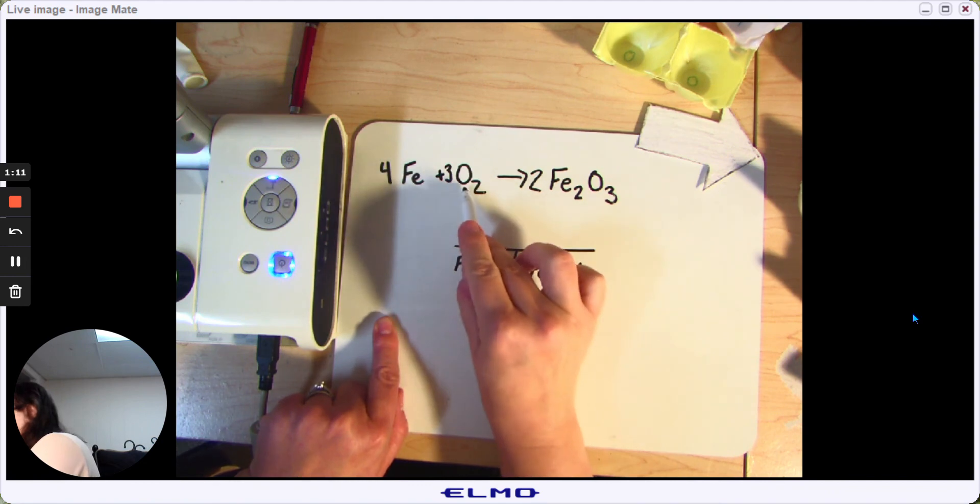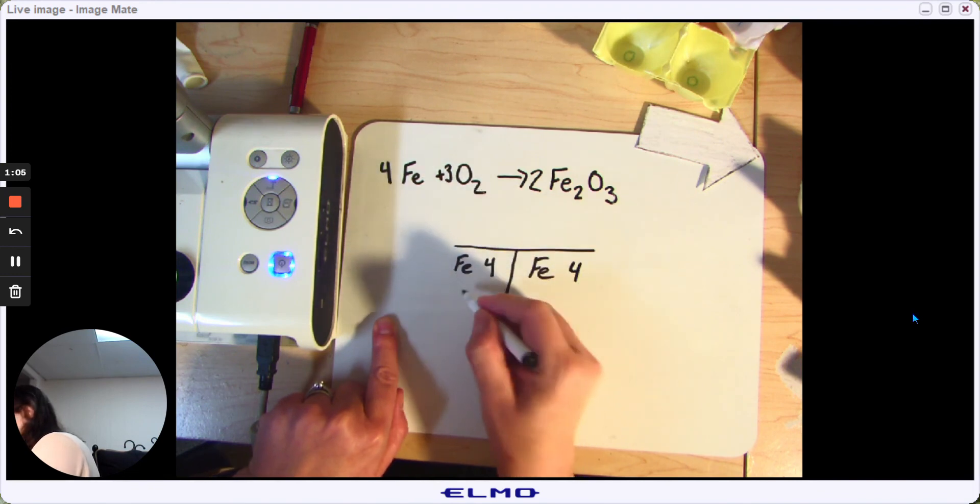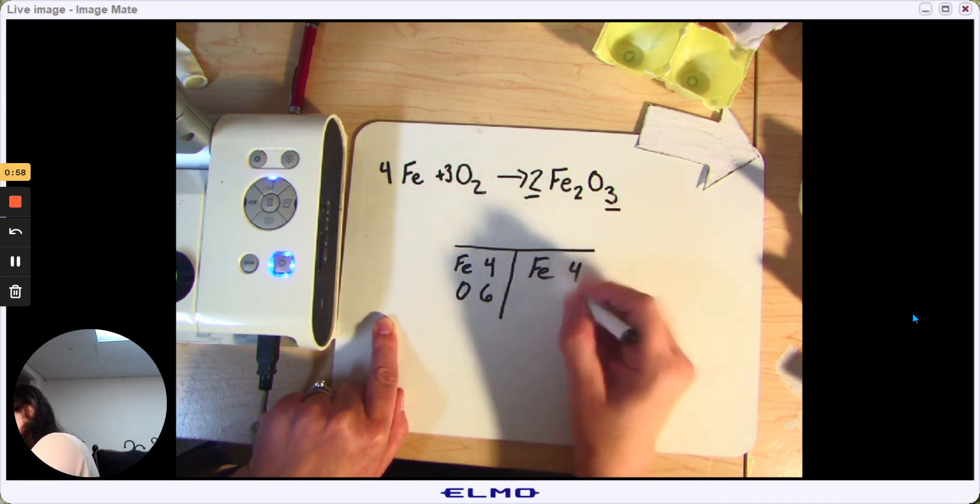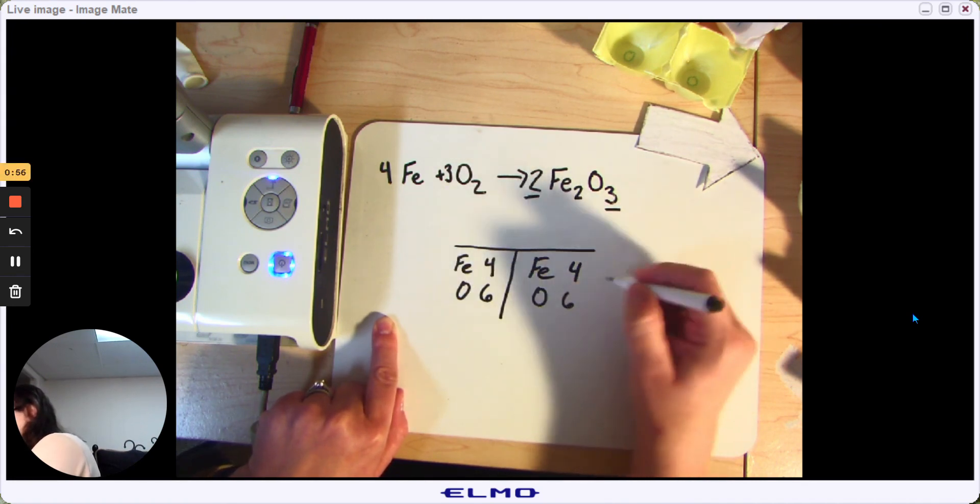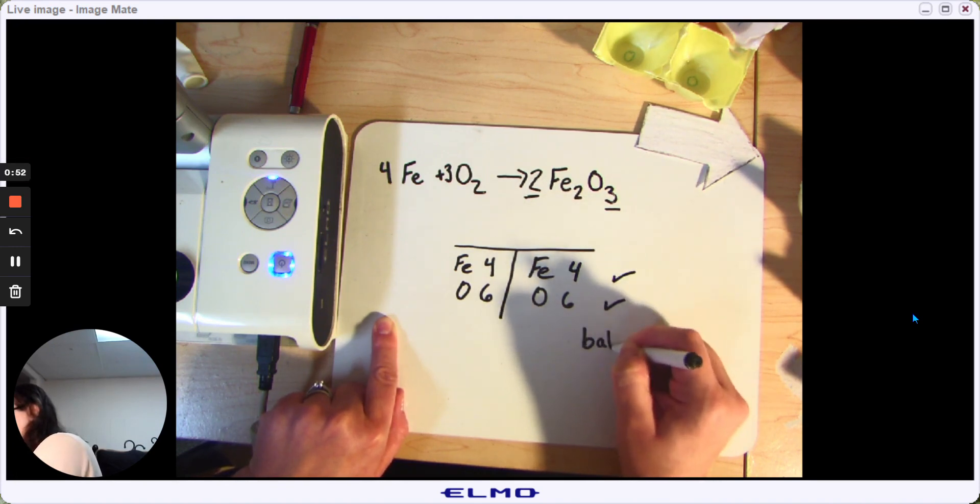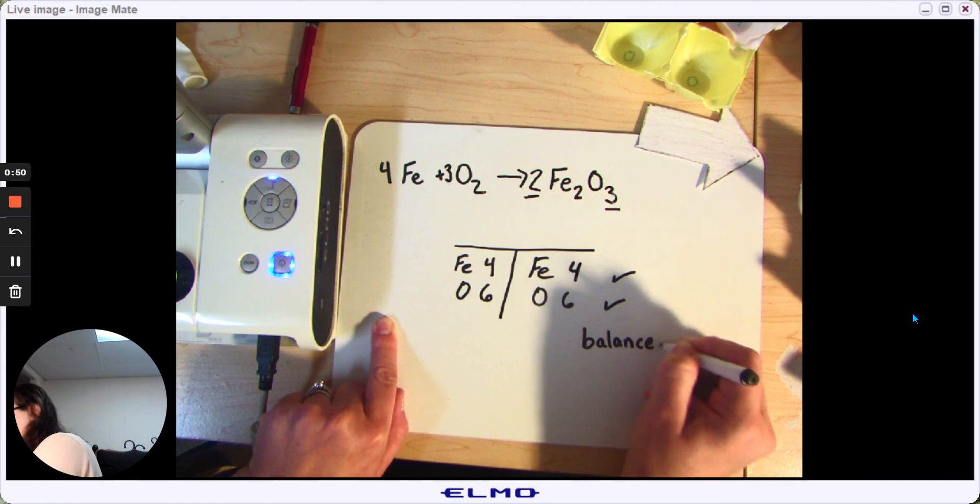Over here we had oxygen. We had three groups of two oxygen atoms, so that's six. And over here we had two groups of three oxygen atoms, so that's also six. And so we have the same amount here, the same amount here, and we can say the equation is balanced.